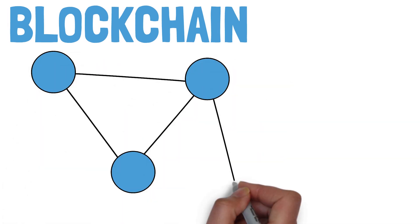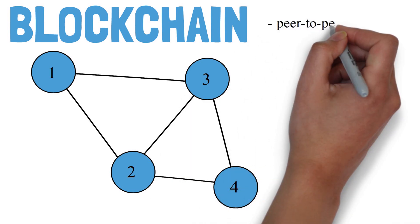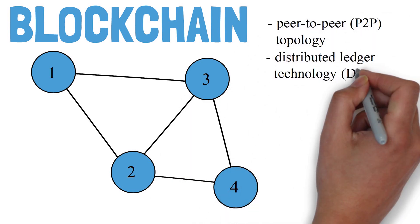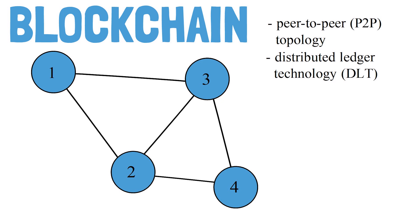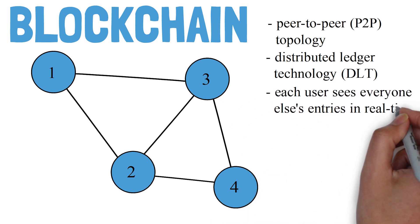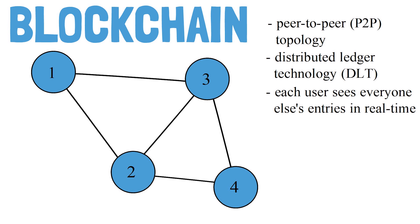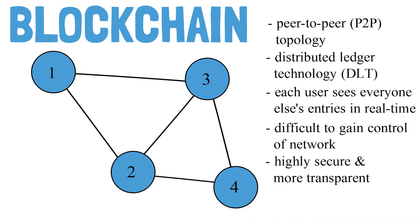By concept, blockchain is based on peer-to-peer topology and is a distributed ledger technology that allows data to be stored globally on thousands of servers, while letting anyone on the network see everyone else's entries in almost real-time. This makes it difficult for one user to gain complete control of the network, making it highly secure, and since anyone can see each entry, it also achieves greater transparency.